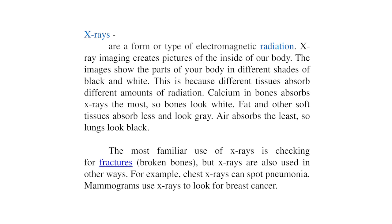X-ray images show parts of the body in different shades of black and white, because different tissues absorb different amounts of radiation. Calcium in bones absorbs x-rays the most, so bones look white. Fat and other soft tissues absorb less and look gray. Air absorbs the least, so lungs look black. The most familiar use of x-ray is checking for fractures and broken bones.